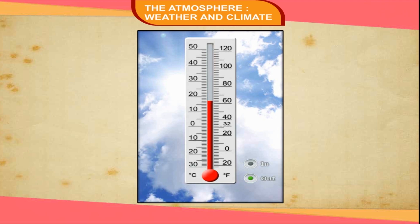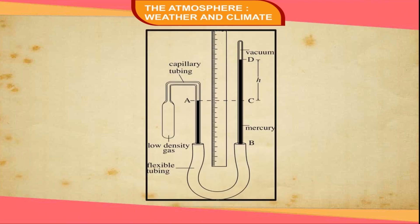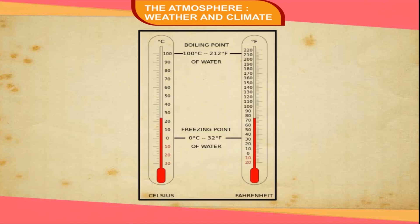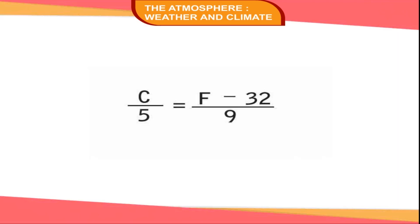Measurement of Temperature. Temperature is measured by an instrument called a thermometer. A thermometer is a narrow glass tube which is graduated and filled with mercury or alcohol. It works on the principle that mercury expands when heated and contracts when cooled. The expansion and contraction of mercury in a calibrated tube indicates the temperature. We use two different scales: Fahrenheit and Celsius. On the Fahrenheit scale, the freezing point is 32°F and the boiling point is 212°F. On the Celsius scale, the freezing point is 0°C and the boiling point is 100°C. The temperature on one scale is converted to another by using the formula: C/5 = (F − 32)/9.